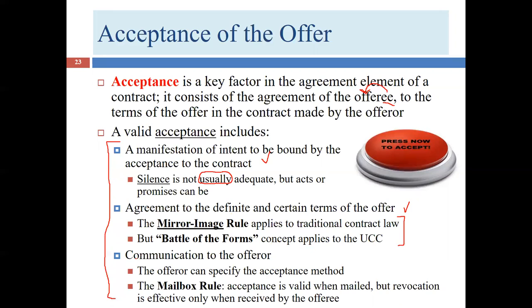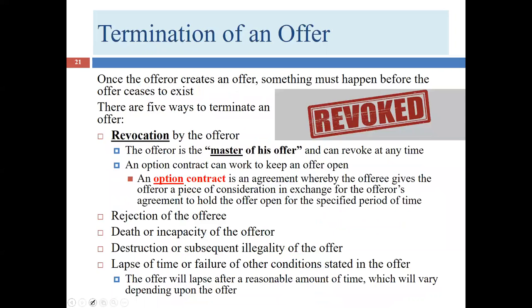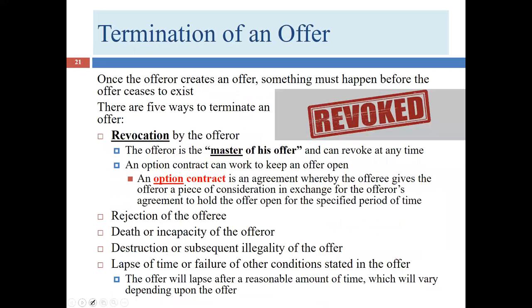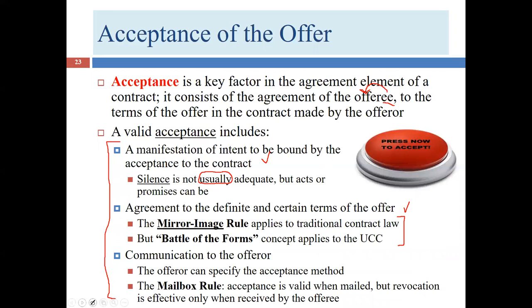The third element is that the acceptance has to be communicated to the offeror — the offeree has to tell the offeror that he or she is accepting. This tracks closely with the third element of the offer, which requires the offer to be communicated to the offeree. The offeror can specify the method of acceptance, except that silence won't work, going back to the master-of-the-offer principle.